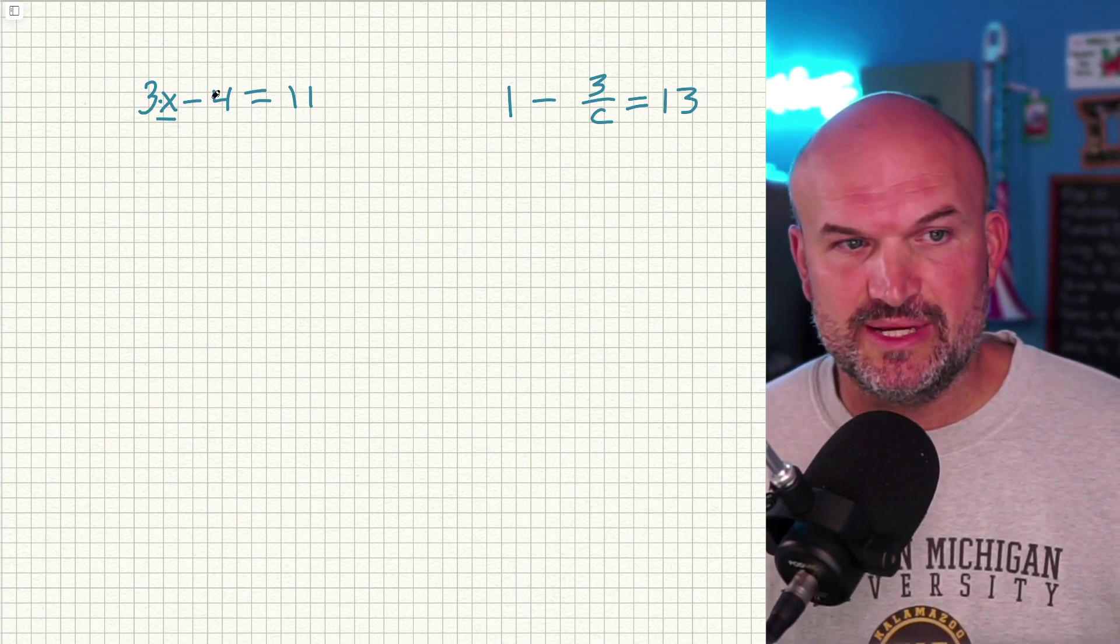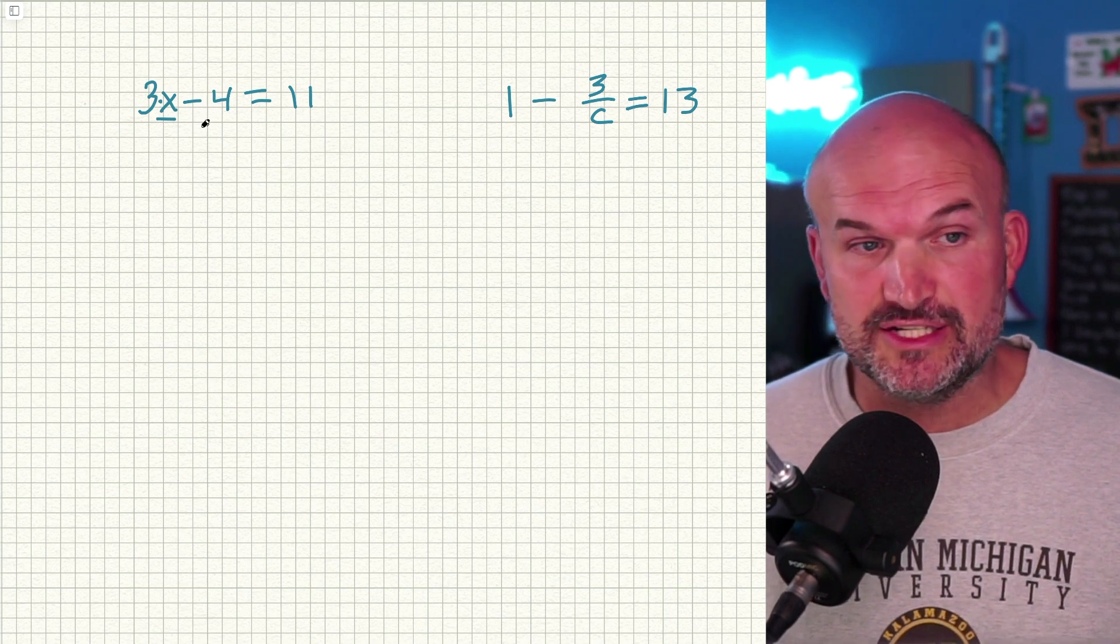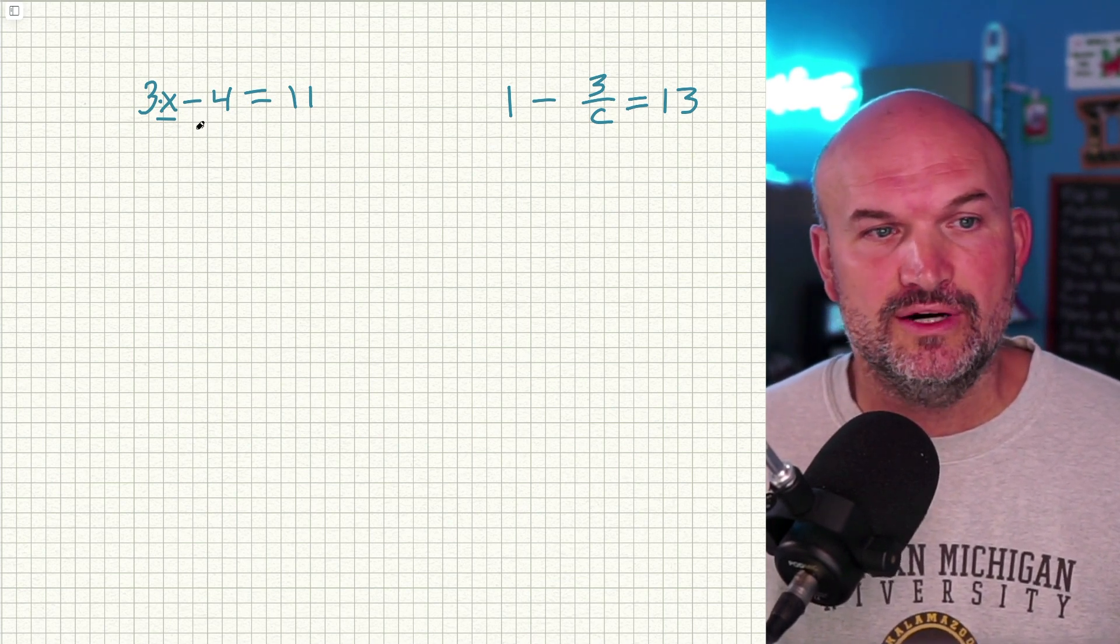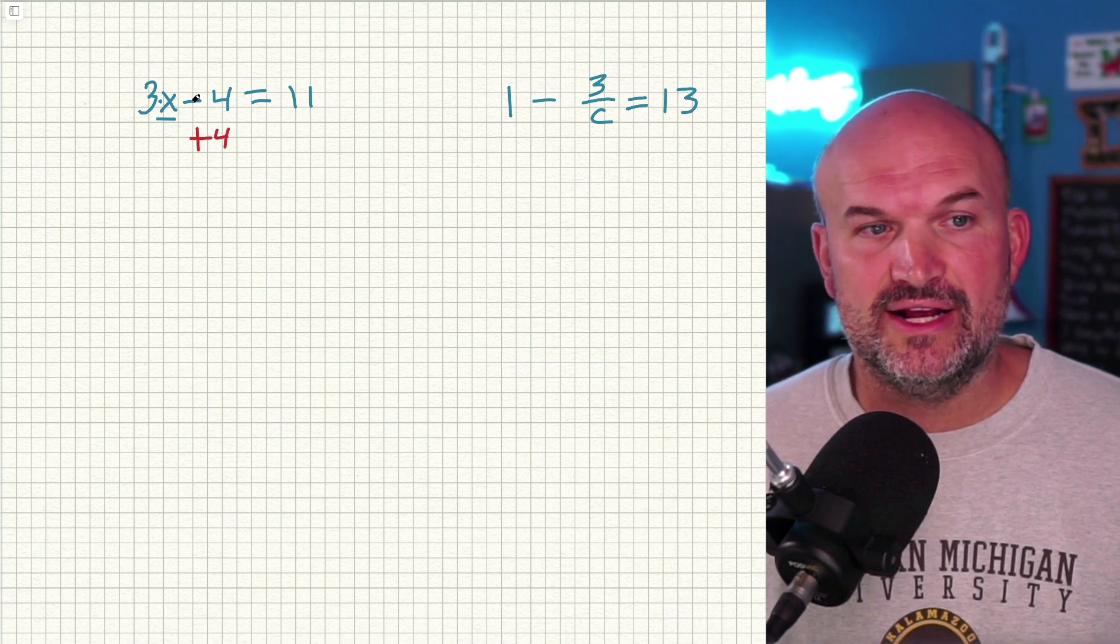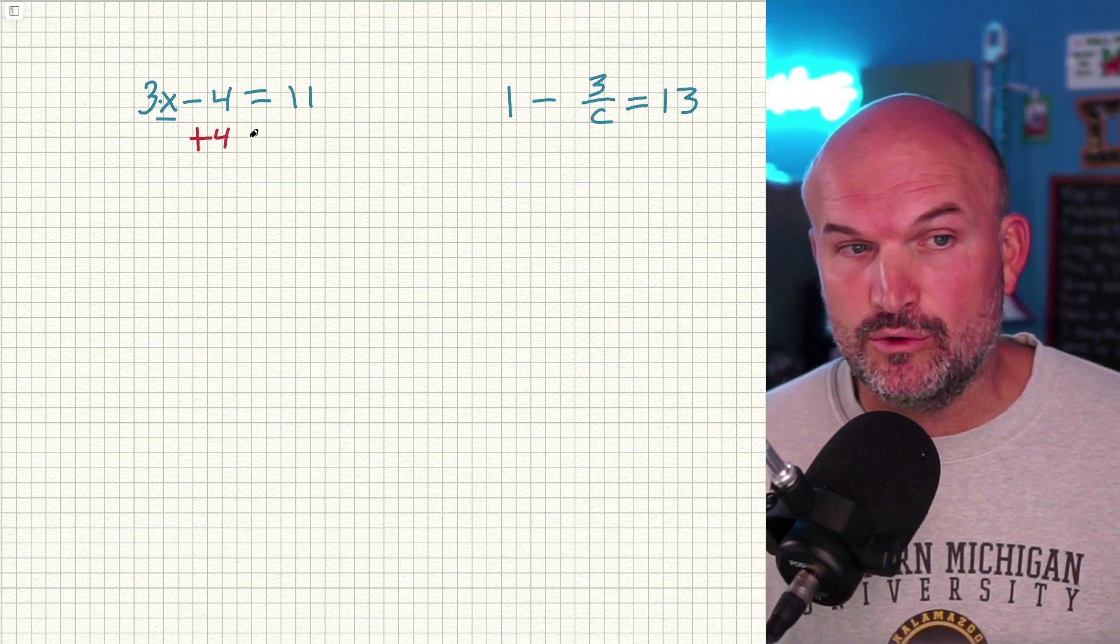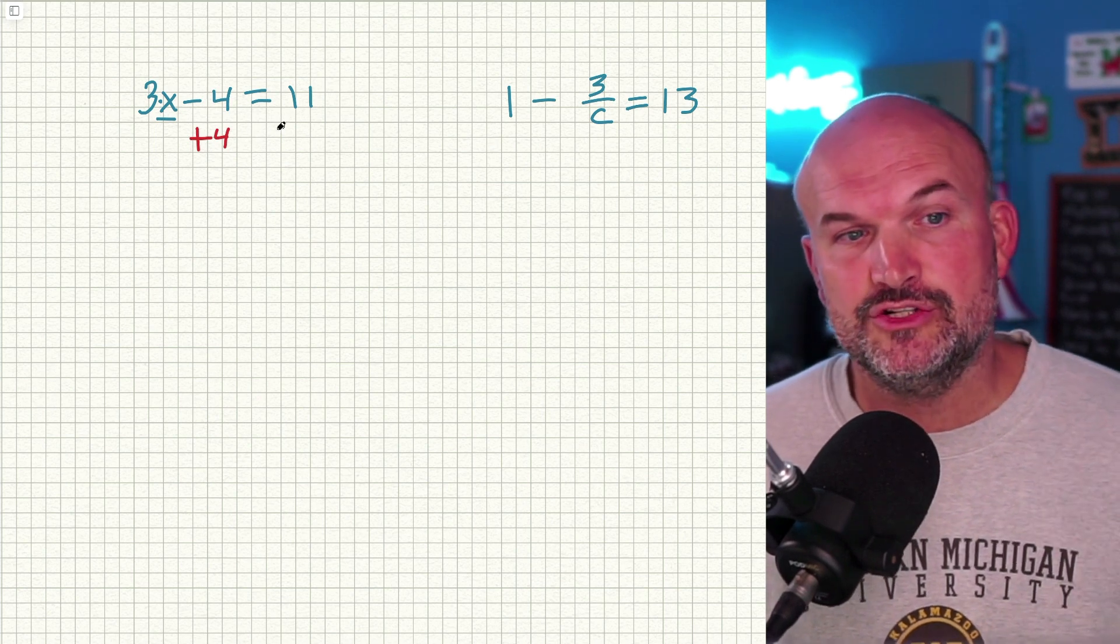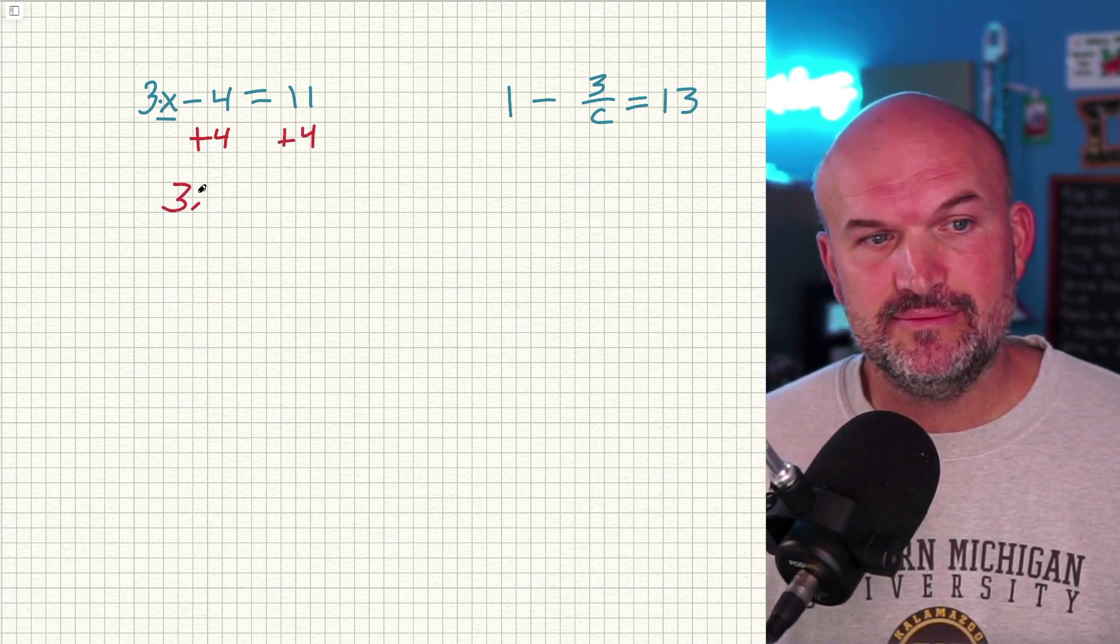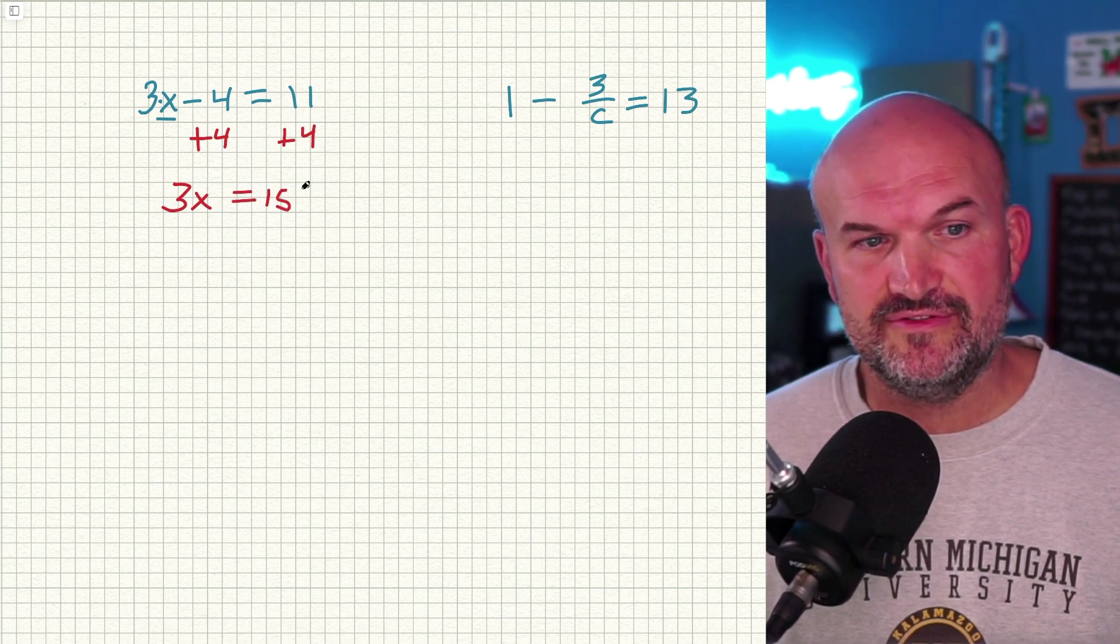So in this case, we have multiplication and subtraction. I need to undo my subtraction first. So to do that, all I'm simply going to do is add a four over here. If you subtract four, now you add four, that's undoing it. But remember, our properties of equality. Whatever you do on one side, you have to make sure you do on the other side. So I'm going to add a four to both sides. That's going to give me the equation 3X = 15.